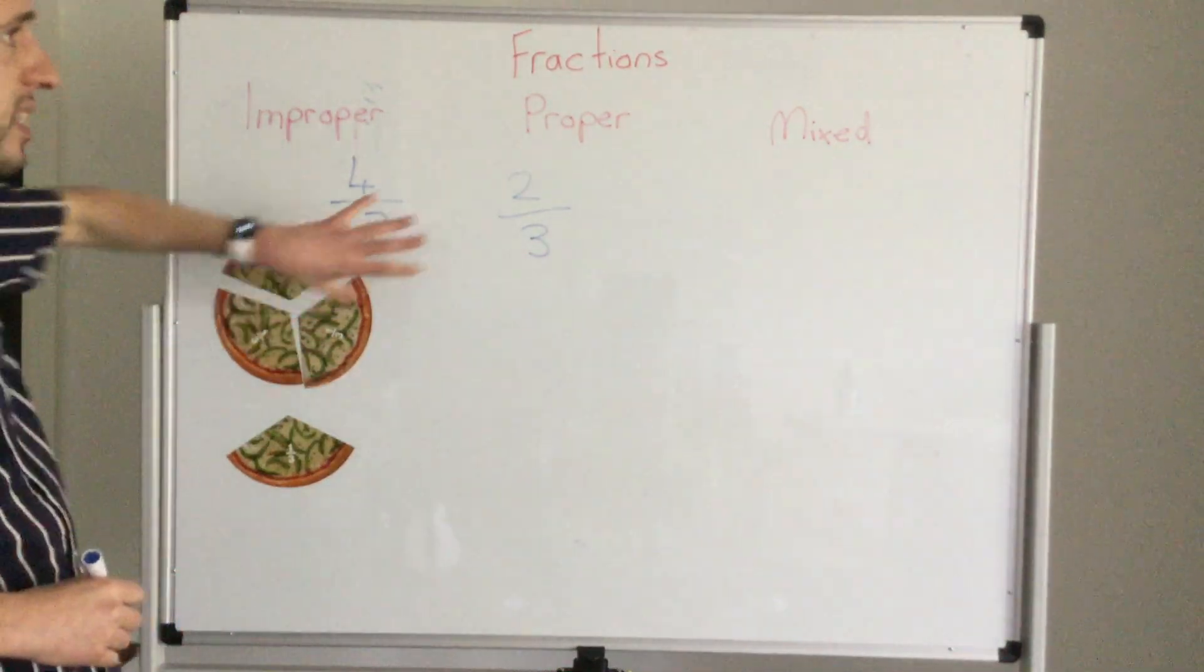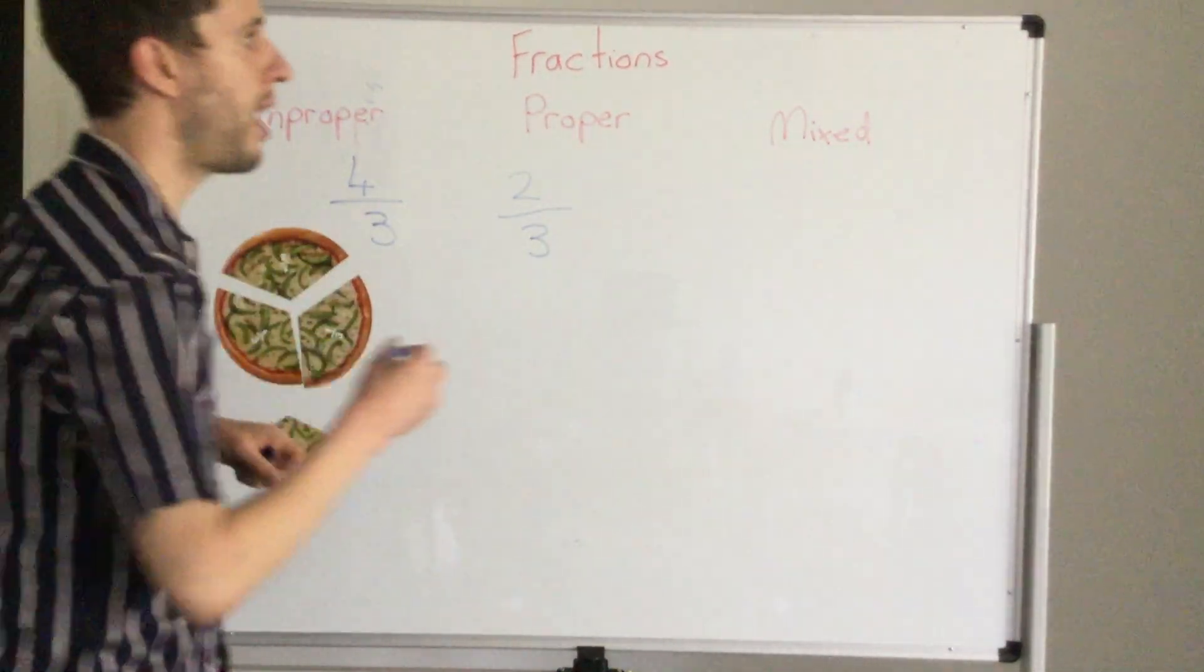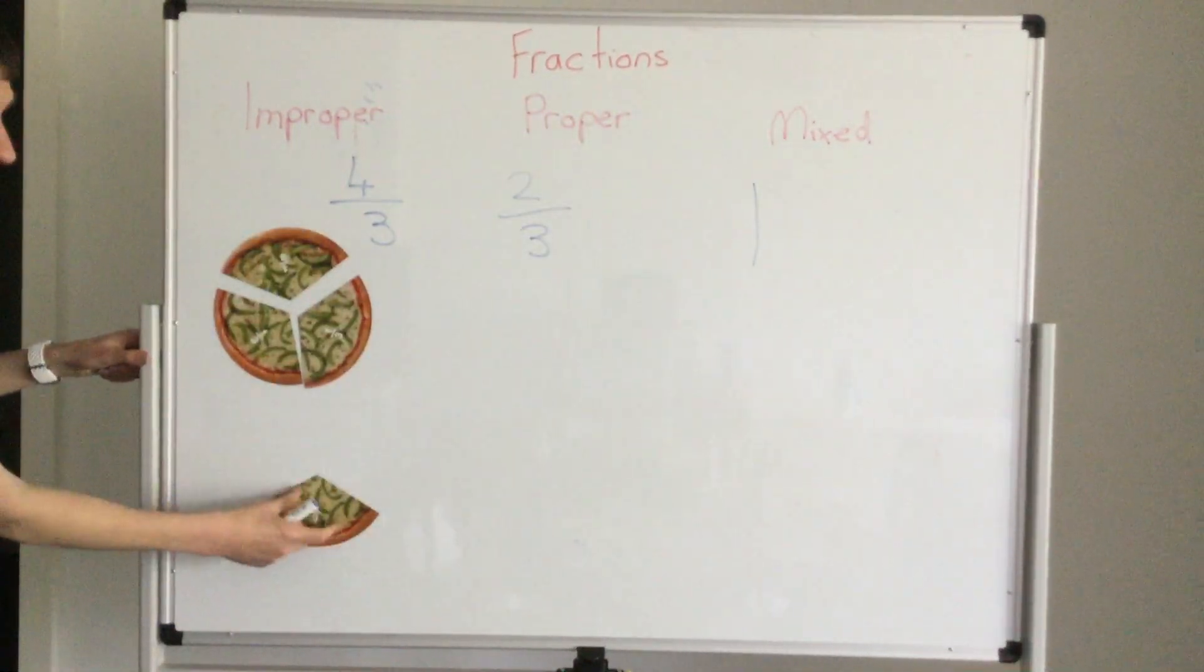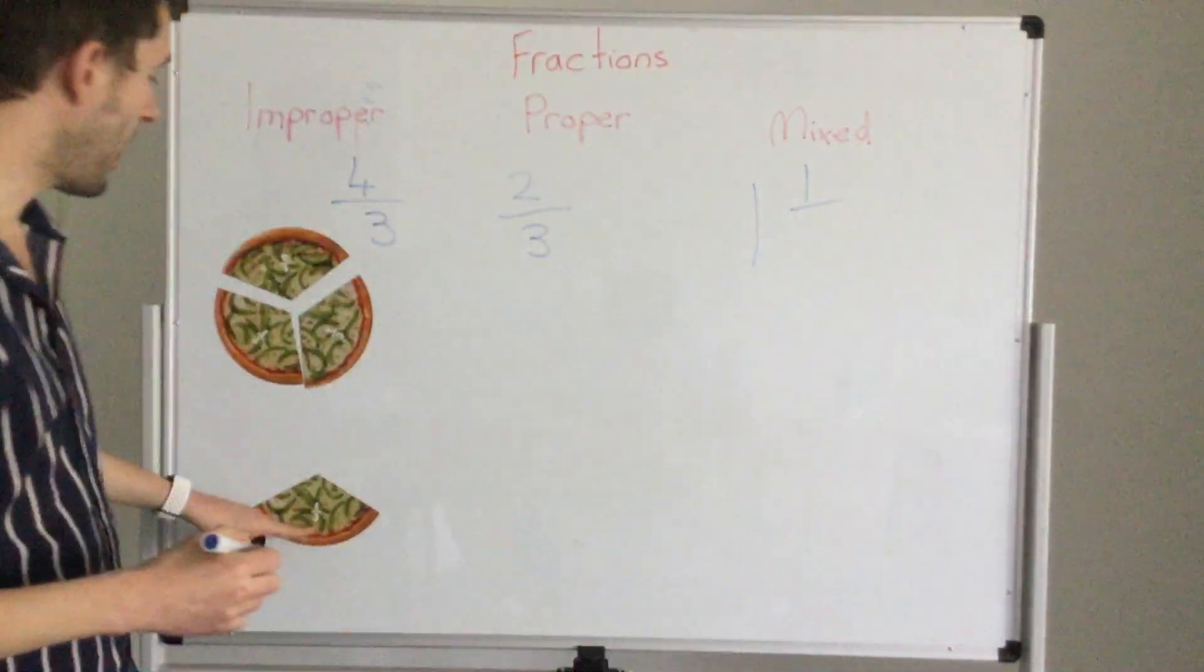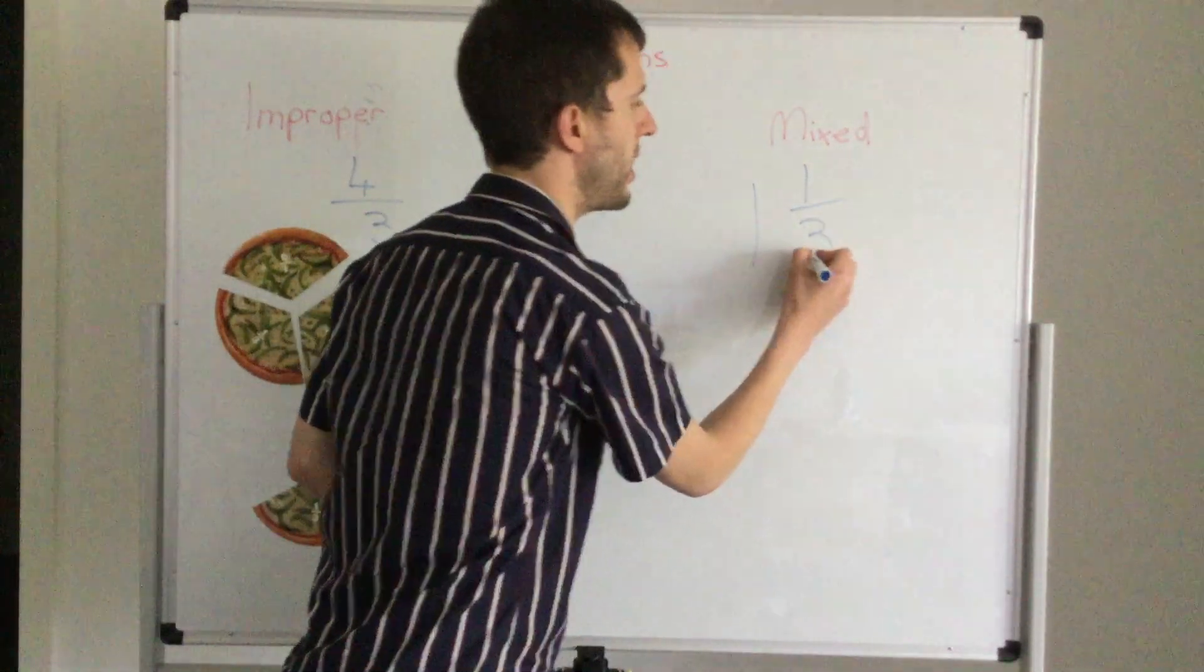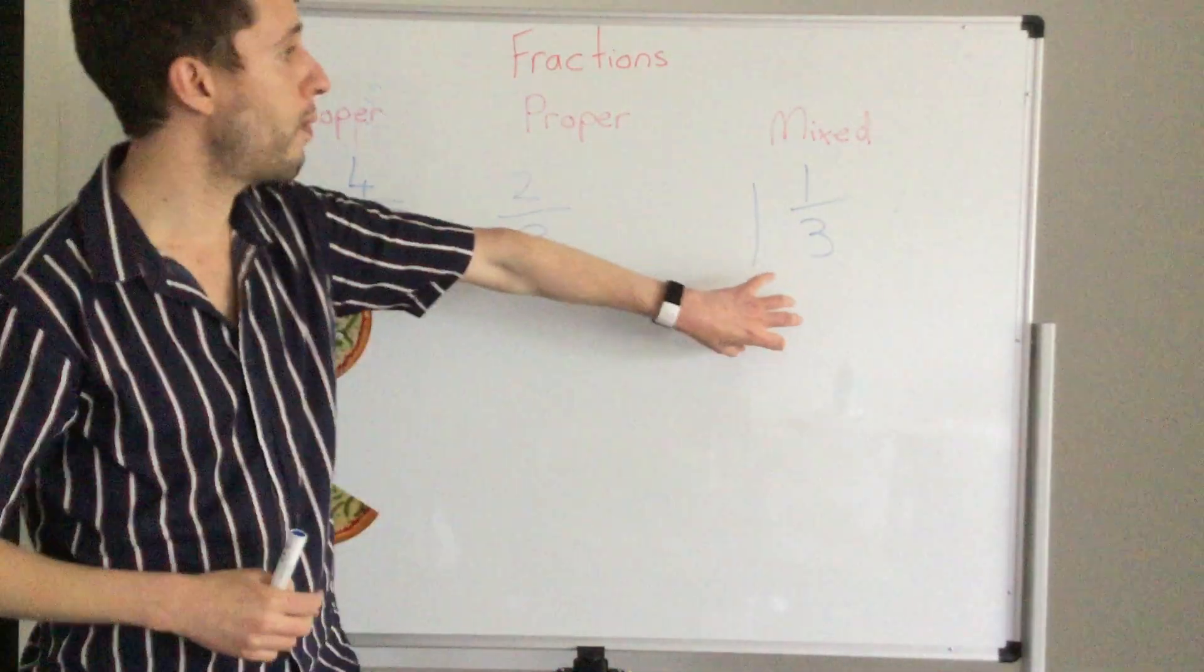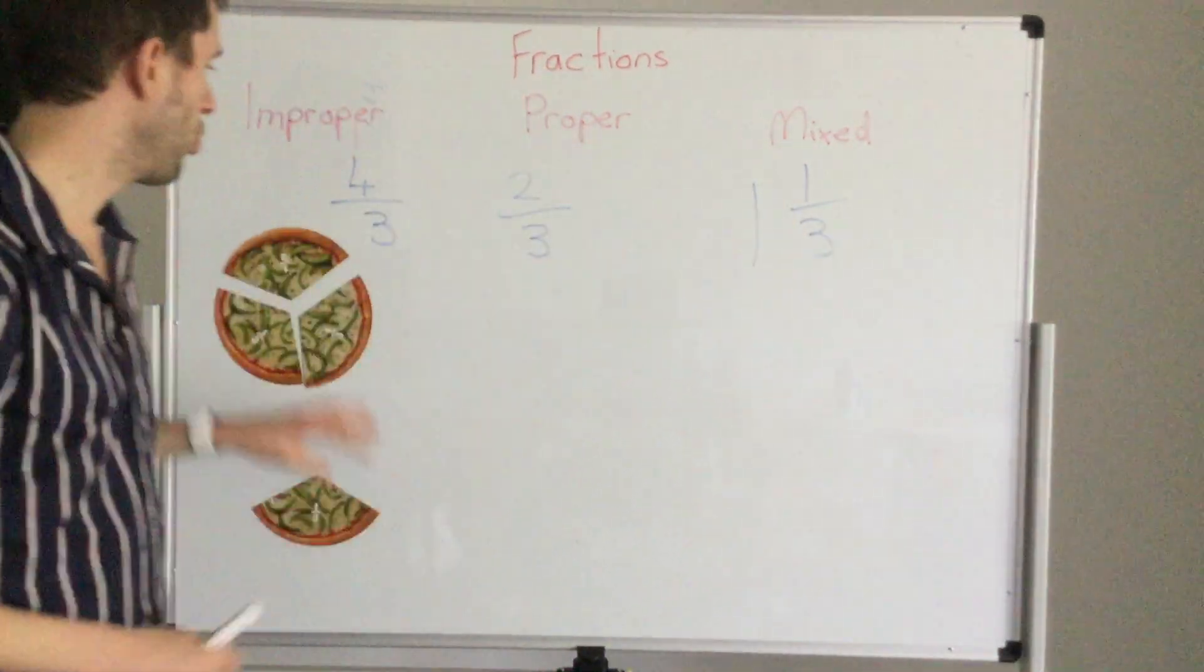That also links into mixed. How many wholes do I have? I have one whole. How many leftover pieces do I have? One. And it's been cut into three pieces. So this is a mixed, which is where we're showing a proper fraction and the wholes that we have.